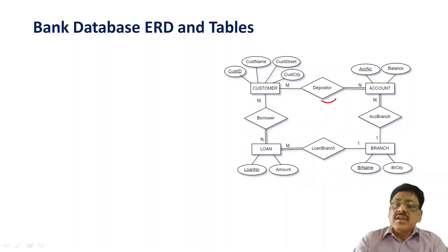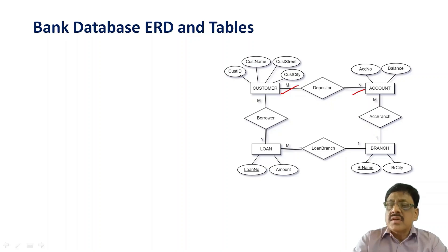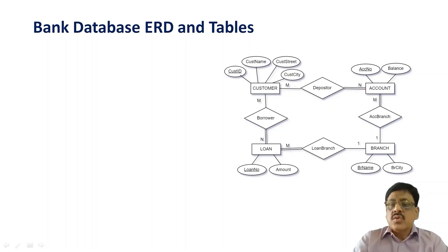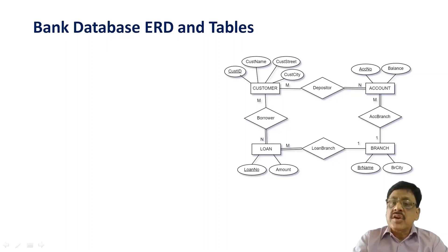Look at the depositor — it is a binary relationship between customer and account. It is a many-to-many relationship, meaning one customer can have more than one account, and at the same time an account can belong to more than one customer. This is a total participation for accounts — all accounts must belong to customers — but this is partial participation, meaning a customer may or may not have an account.